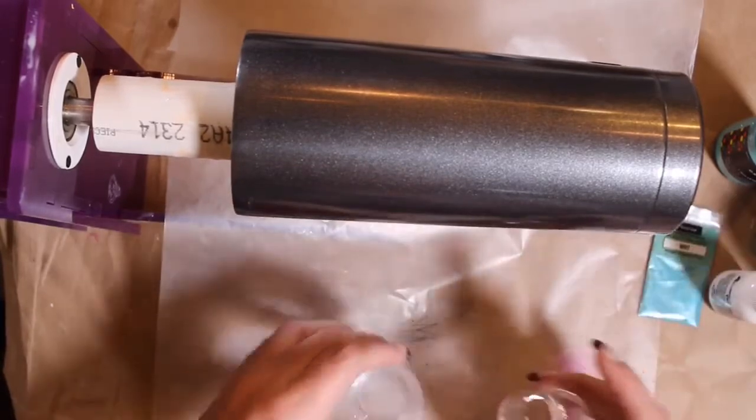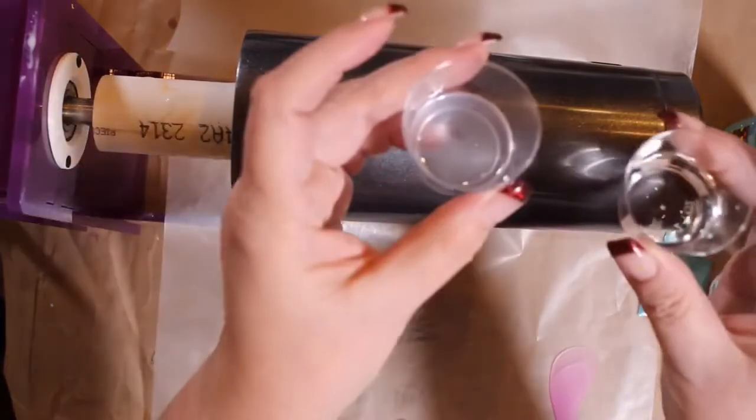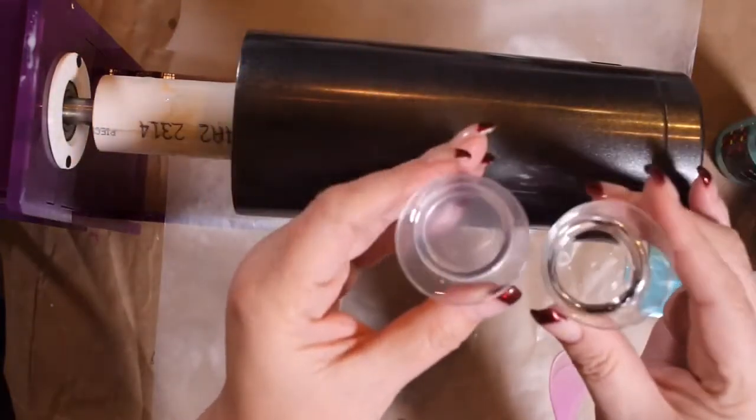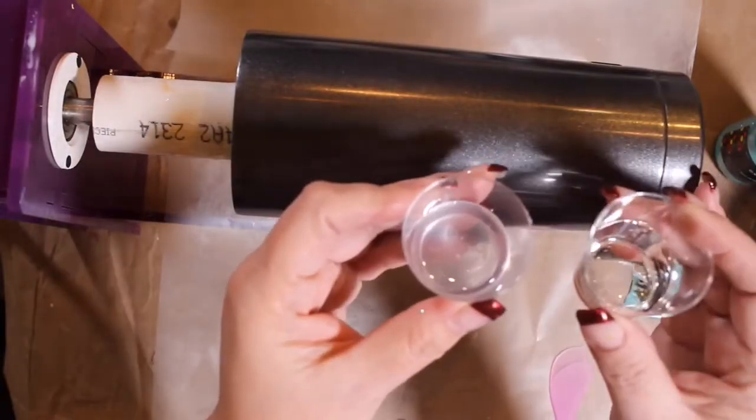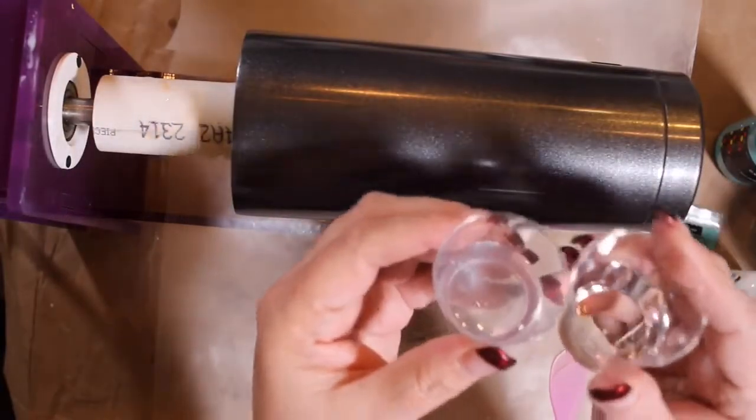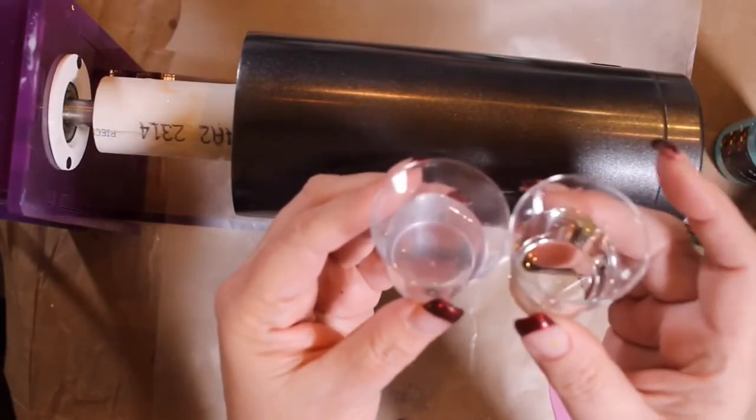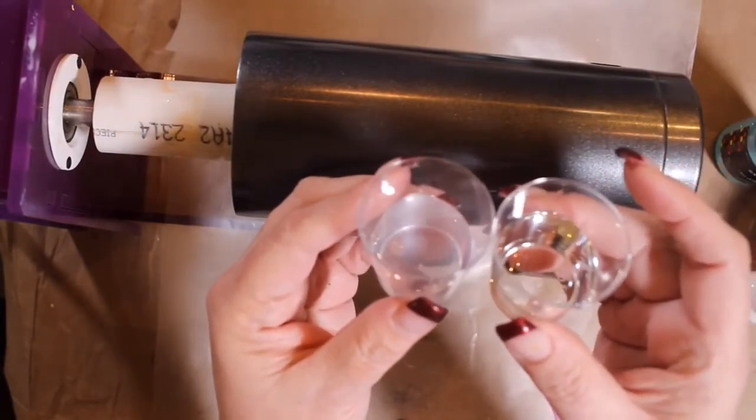I use a two-part epoxy, Part A and Part B. This is from a company called Alumilite—I buy direct from them. You can also buy them at Michael's, Hobby Lobby, those types of stores in smaller quantities.